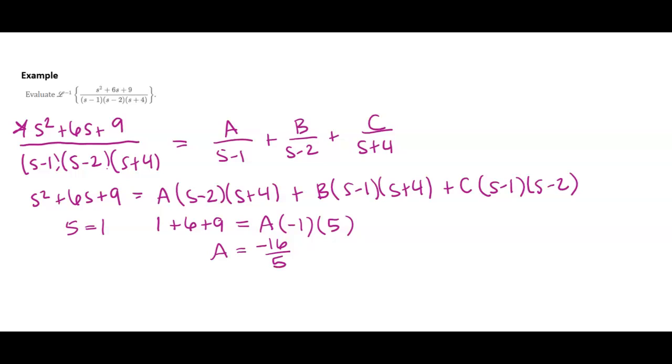I can do this for each and every piece here. So I could do S equals 2, I could do S equals negative 4. And I'll just let you know what a, b, and c are. So we found a, b ends up being 25 over 6, and c ends up being 1 over 30.